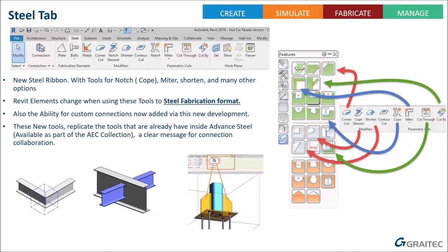These tools have been taken from Advanced Steel, so although they're new for Revit users, they are the same tools that have been inside Advanced Steel for the last 15 years. As a Revit user you can now create models with a higher level of detail without model-in-place families. You can then export this model and pass it to your Advanced Steel draftsman for fabrication drawings, reducing the siloed workflow.